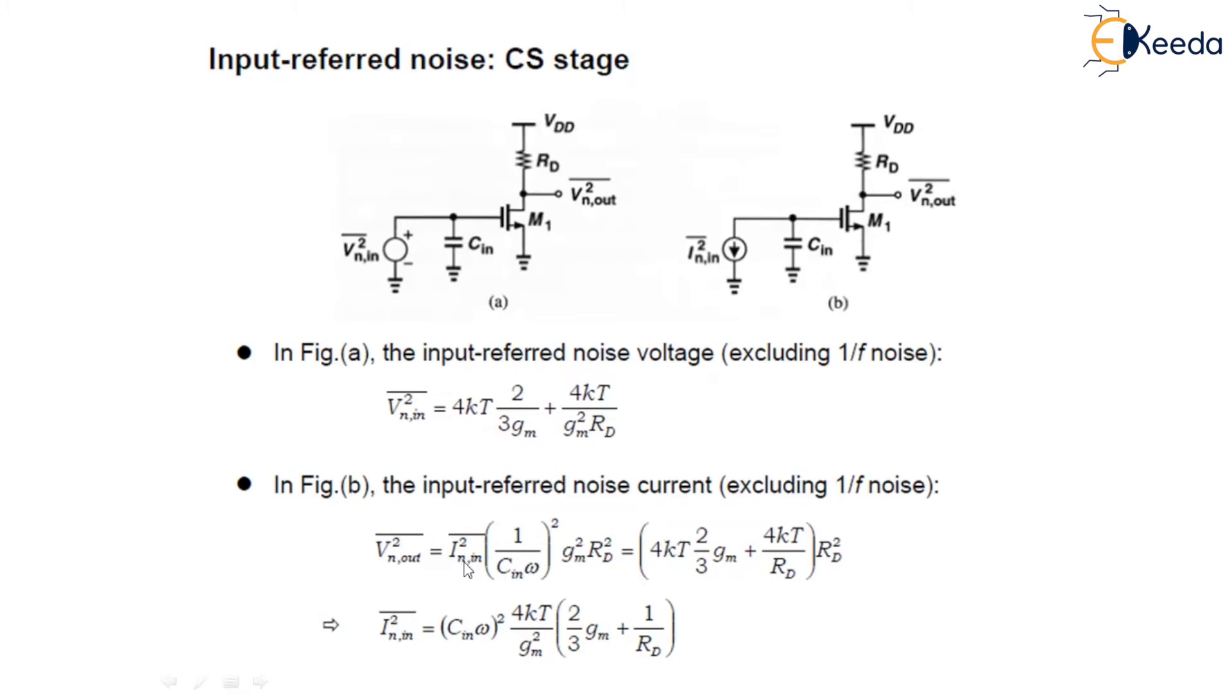We can calculate the input noise current, which equals (C_in·ω)²·4kT/gm²·[(2/3)·gm + 1/RD].